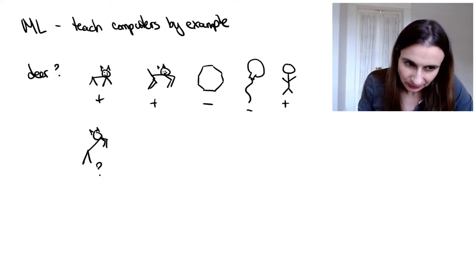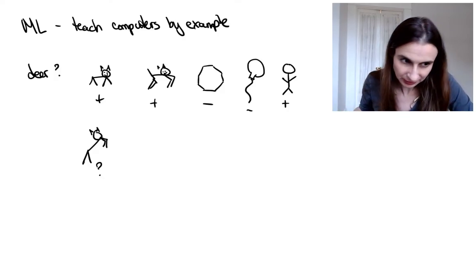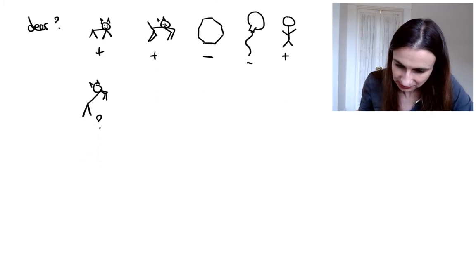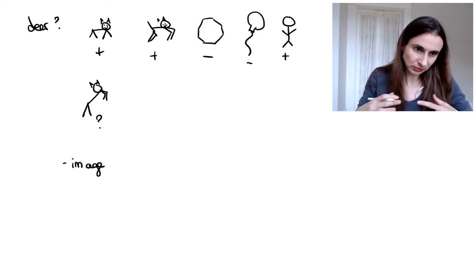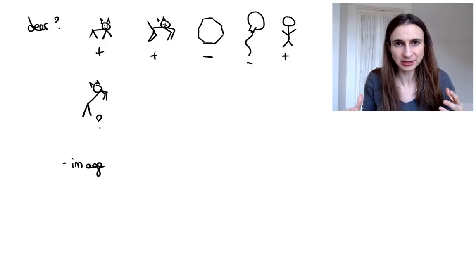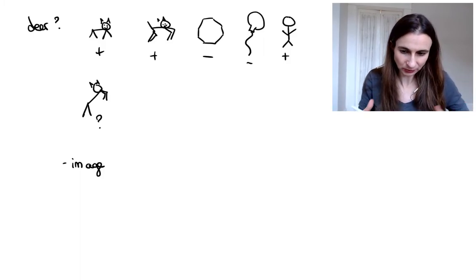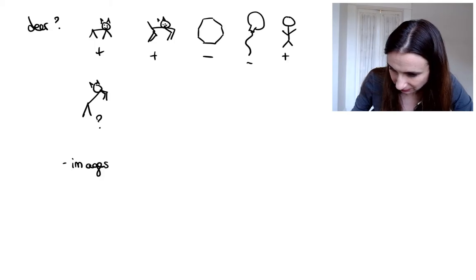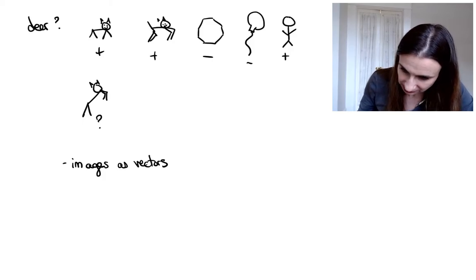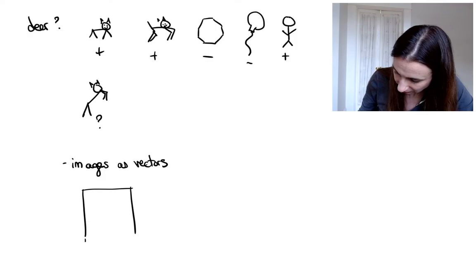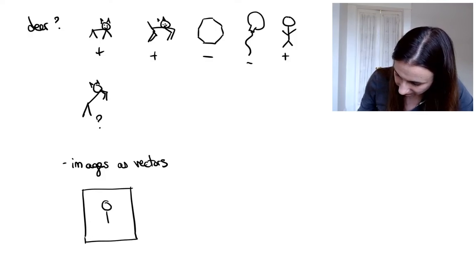So I want you to, as part of all this, I want you to get into the mode of thinking about images as being vectors, okay? So that's like a key idea in machine learning is that when you represent data, you're going to try to represent it as vectors so that you can work with it in the computer. So I'll write here images as vectors.